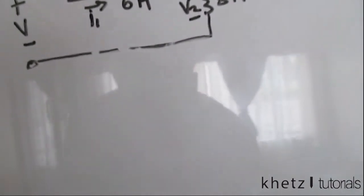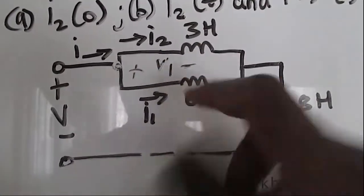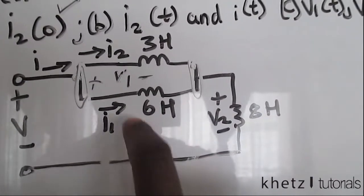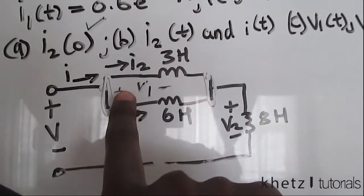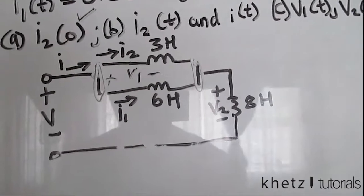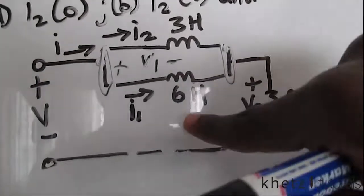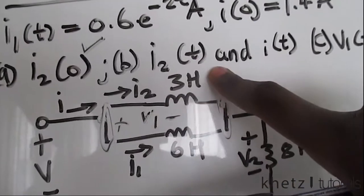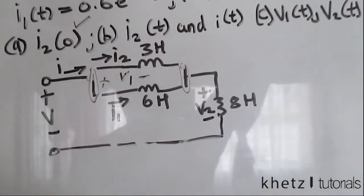Moving on to i2(t): i2 shares two nodes with the inductor which has i1 across it, and there is a v1 indicated. Since the two inductors are in parallel they have the same voltage. We have more information about i1 than i2, so we are going to use i1 and v1 to find i2.